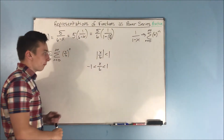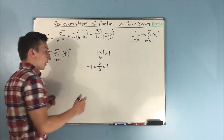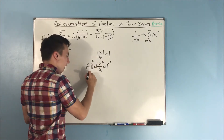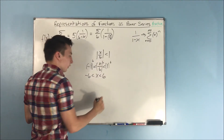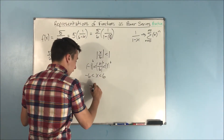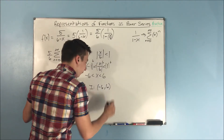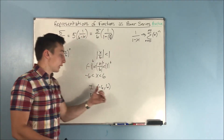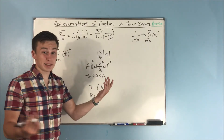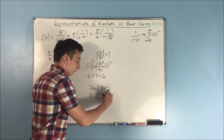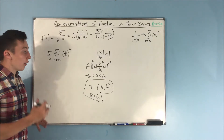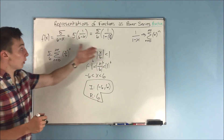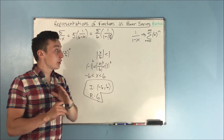Removing the absolute values gives us negative 1 less than x over 6 less than 1. Multiplying through by 6 gives negative 6 less than x less than 6. So the interval of convergence is from negative 6 to 6. The center is 0, and from 0 to 6 the radius of convergence is 6. The key idea is just getting your function into the 1 over 1 minus something form — if you can do that, you're fine.